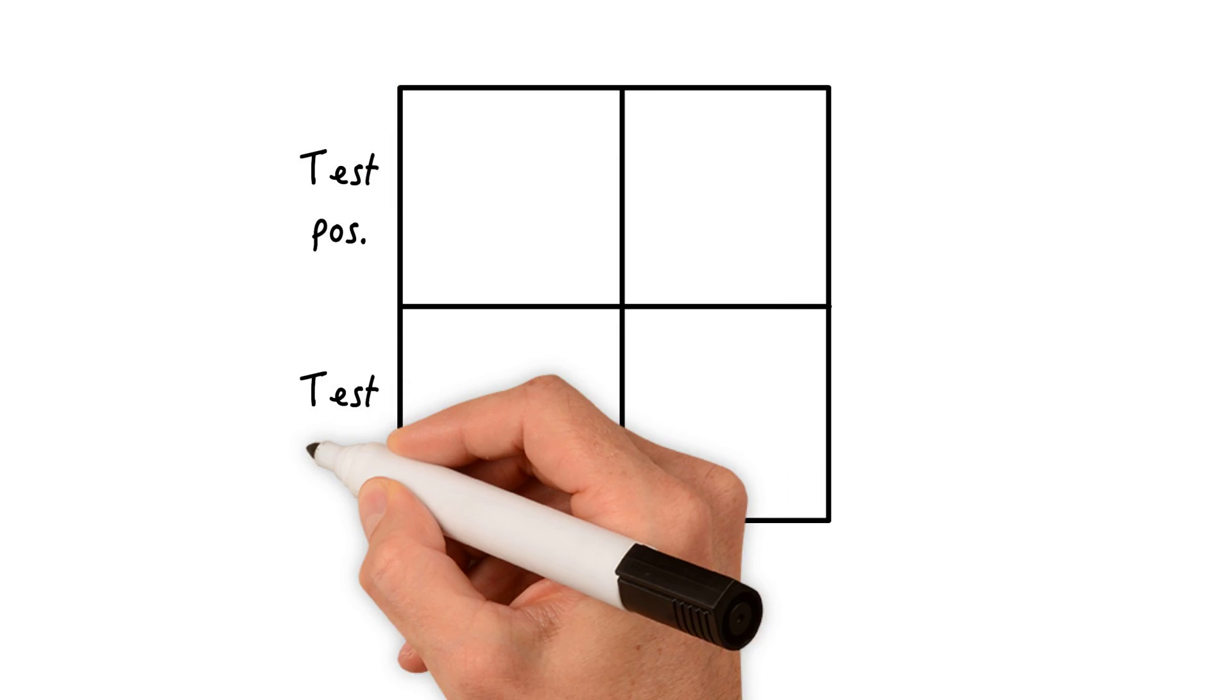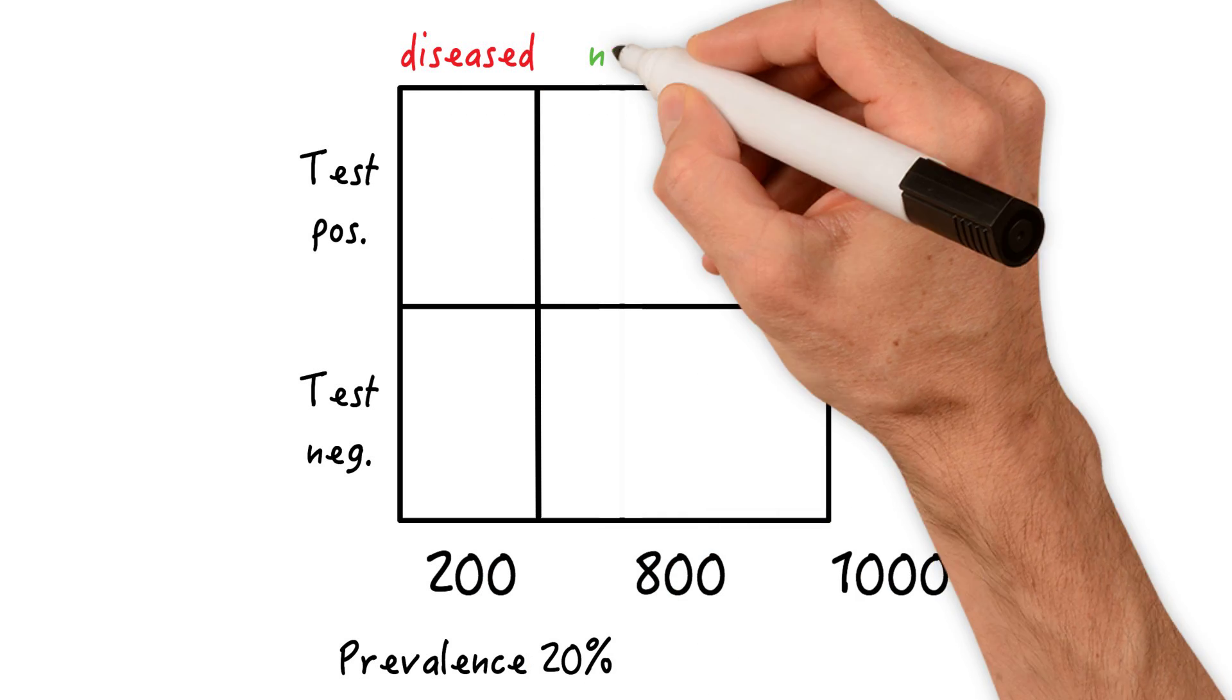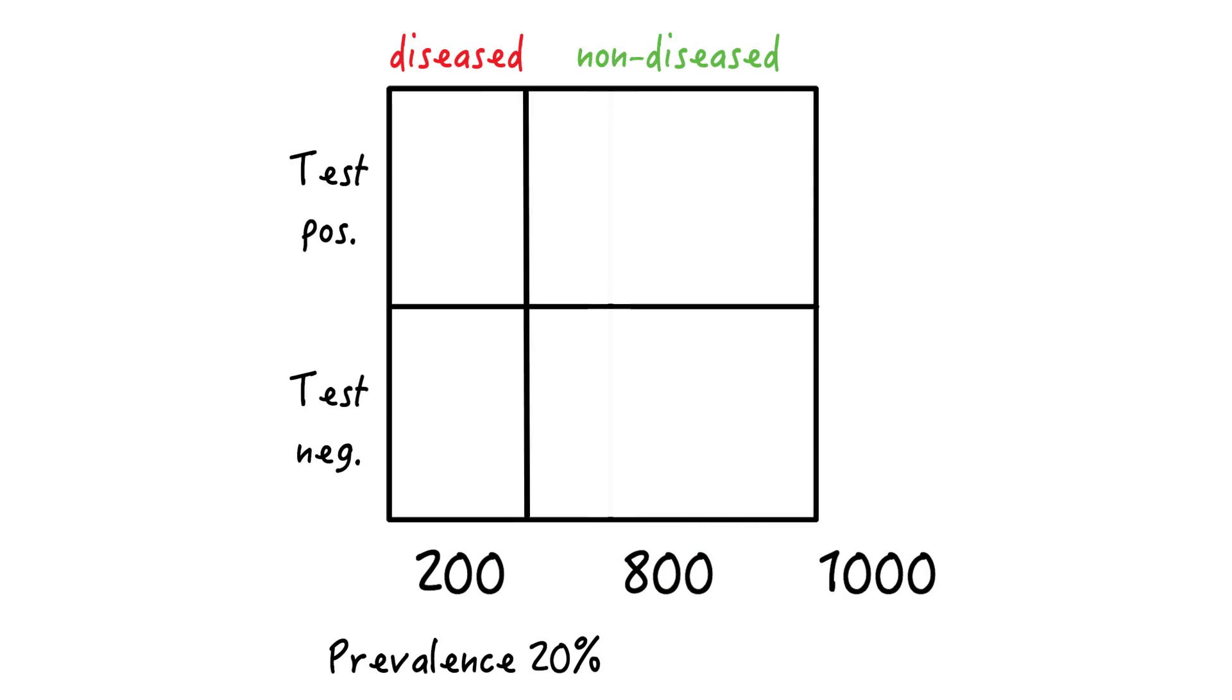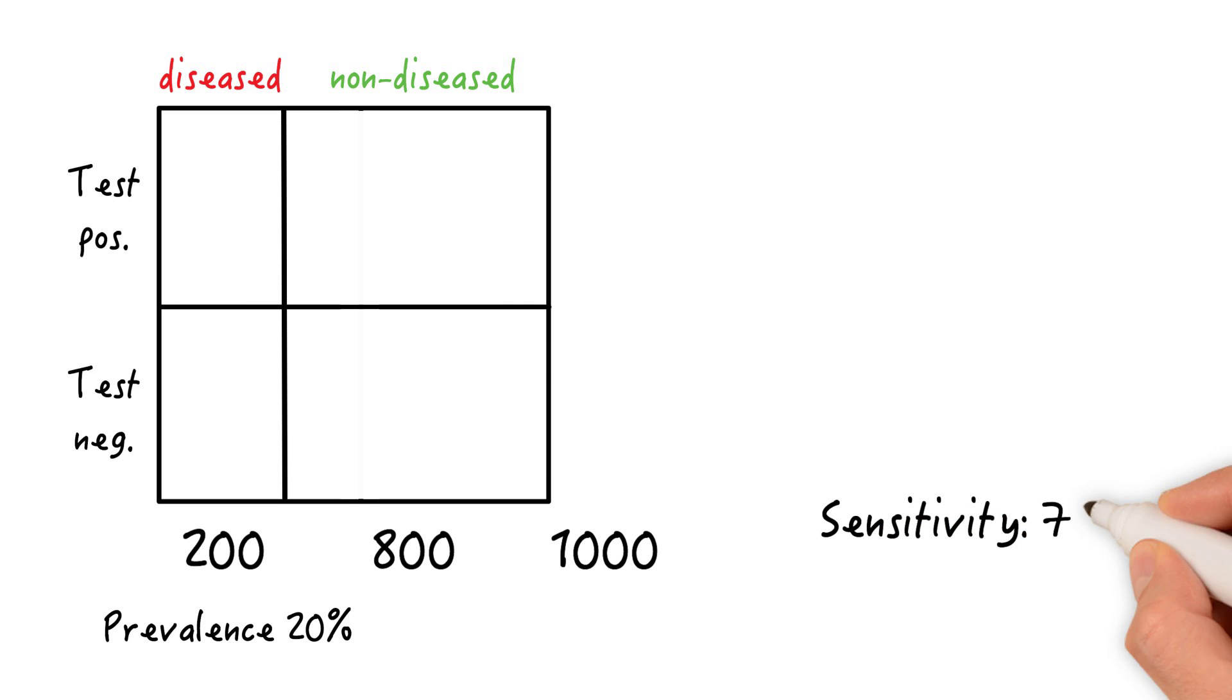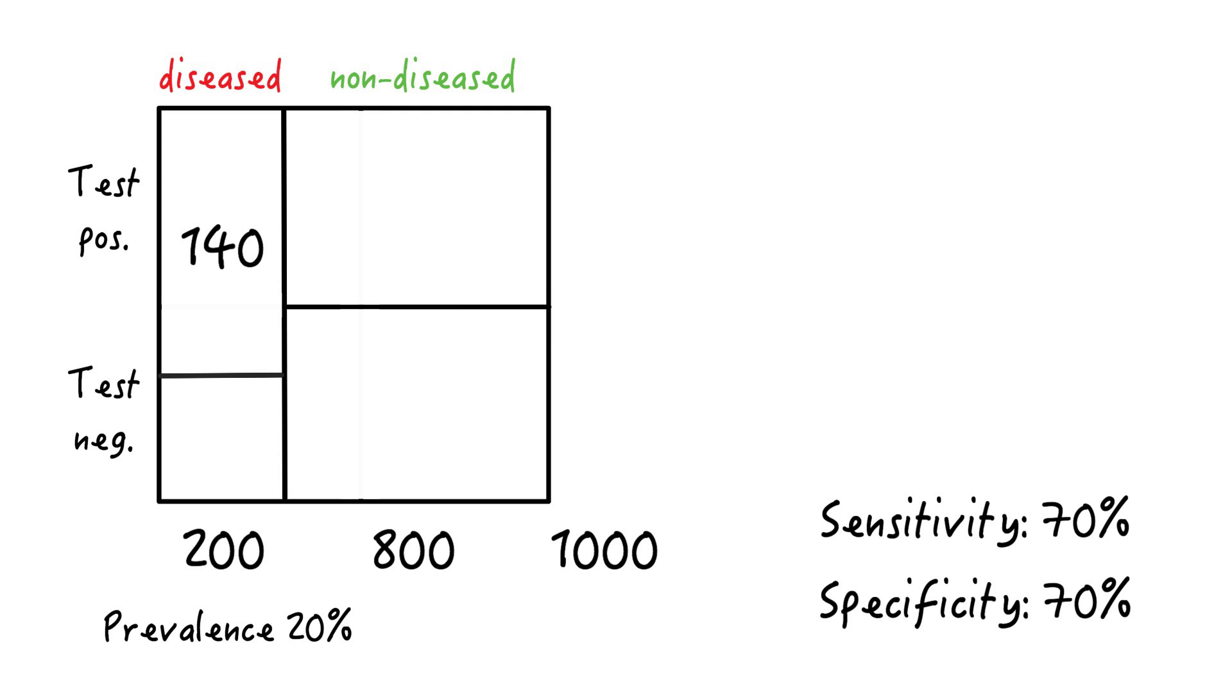Let's take our population of 1,000 individuals again, and this time let's say the prevalence is 20%, so 200 have the disease and 800 don't. Let's say the test sensitivity is 70%, and the specificity is also 70%. So out of the 200 diseased, 70% or 140 will be picked up by the test, whereas 60 will be missed.